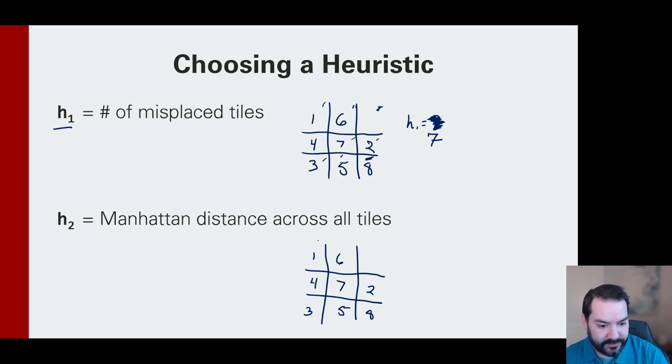If we look at that 1 position, that would take 1 plus 6. 6 needs to go down 1, 2, 3. 4 needs to go 1, 7 needs to go down 1, 2 needs to go up 1, 3 needs to go up 1, 5 needs to go up 1.